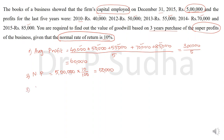After calculating normal profit, the third step is to calculate super profit. Super profit equals average profit minus normal profit: 60,000 minus 50,000. So the super profit in this problem is 10,000.